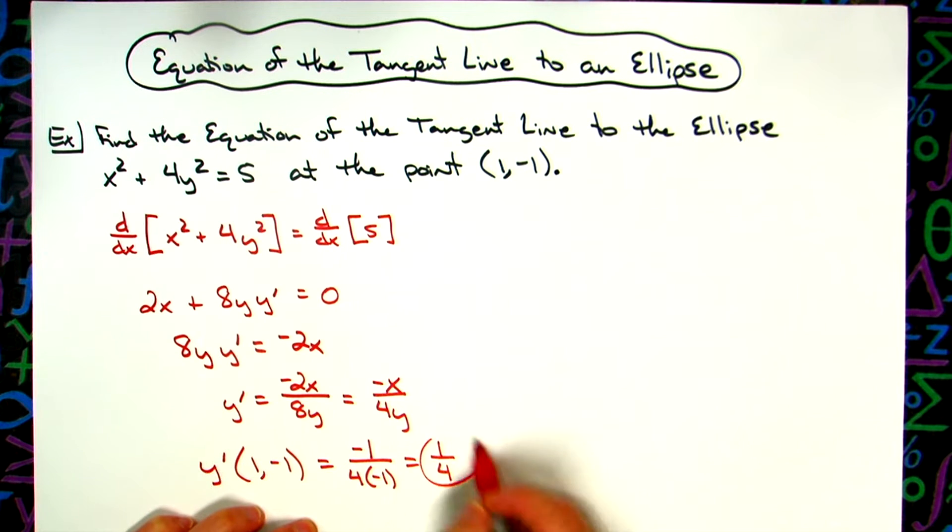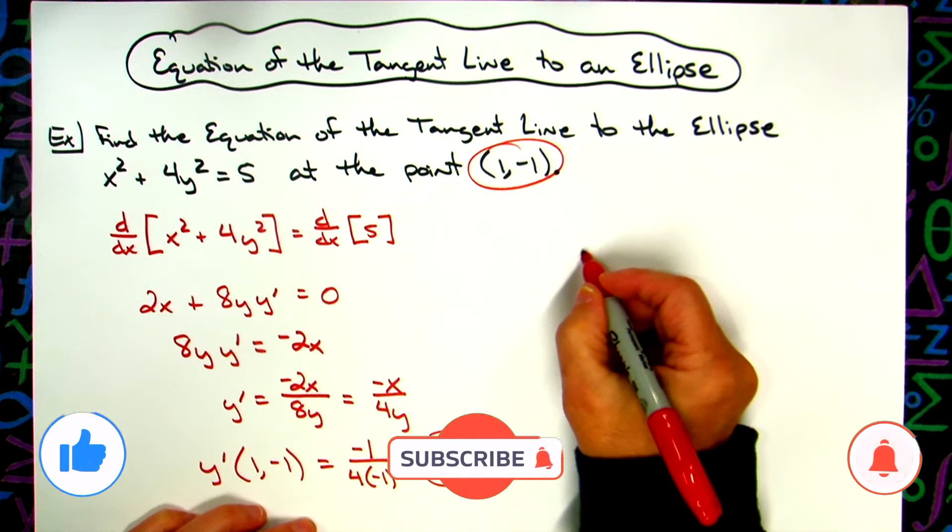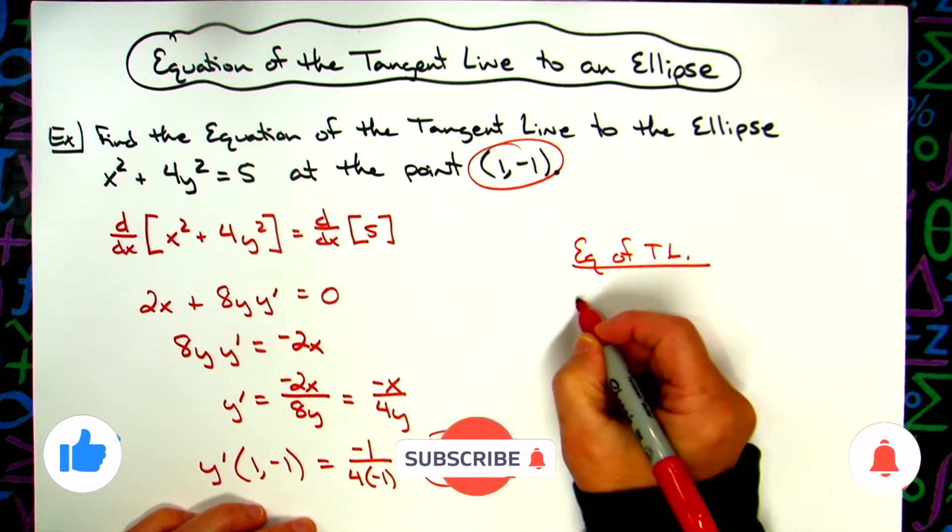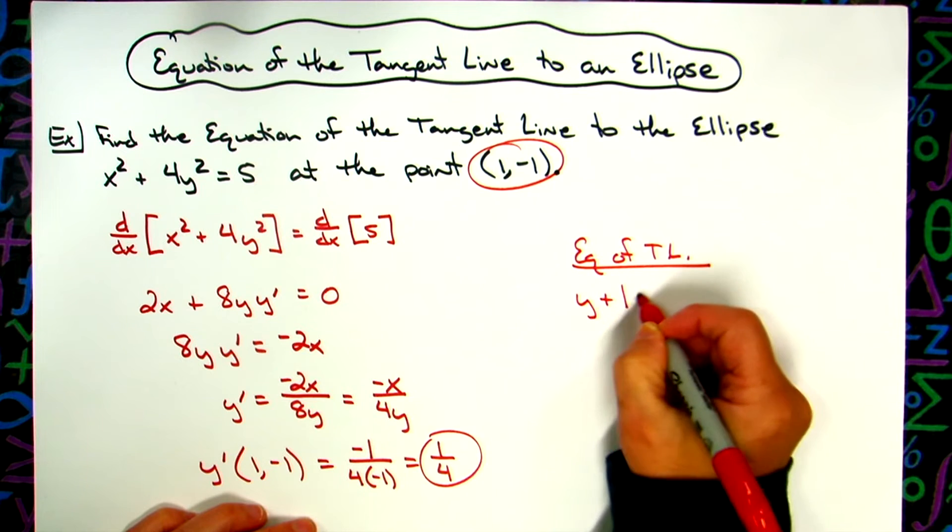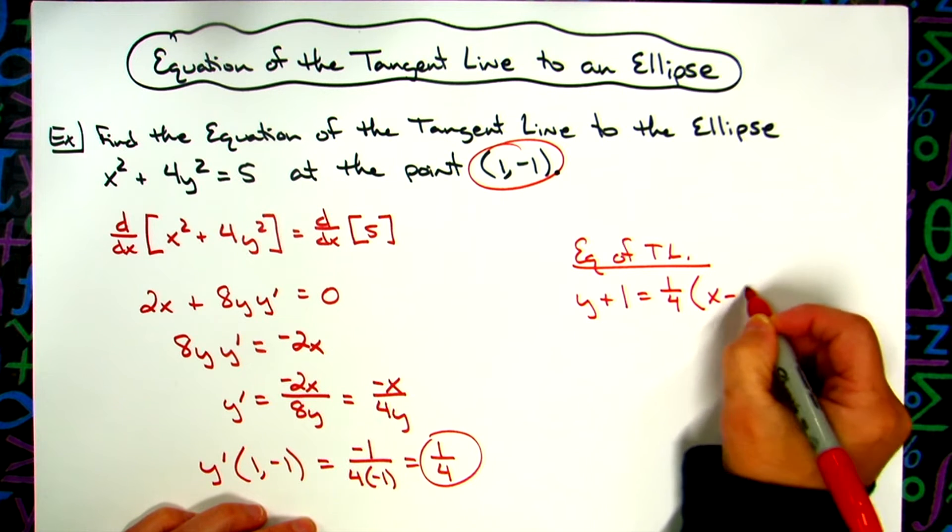Now using that slope and the point where I want the tangent line, my equation of the tangent line using point-slope form is going to be y + 1 = 1/4(x - 1).